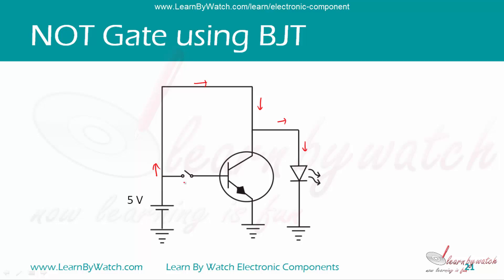In another case, when this switch is ON, the base terminal of BJT will be having some positive voltage. Current will flow from here through the BJT since it will be in ON state. When this BJT is in ON state, the voltage difference between the collector and emitter terminal is almost zero, so current will not flow through the LED and it will not glow because this point will be at almost zero voltage.